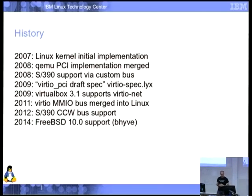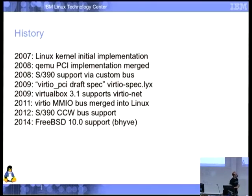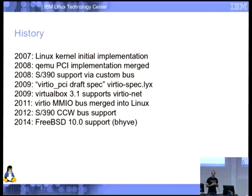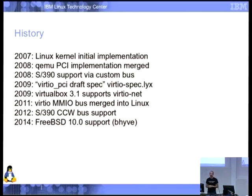History. I went back to the Git history to look at these — Git commits aren't always reflective of when the work happened. The kernel implementation of VirtIO PCI and also VirtIO Lguest went in in 2007, labeled experimental — so of course no one was ever going to use it in production. The QEMU PCI implementation merged into the main QEMU tree a year later in 2008, having obviously floated around before that.